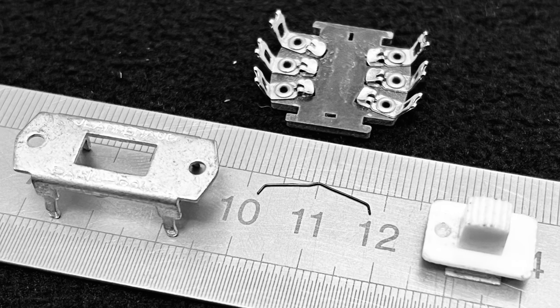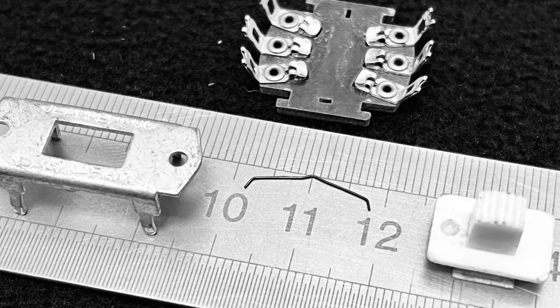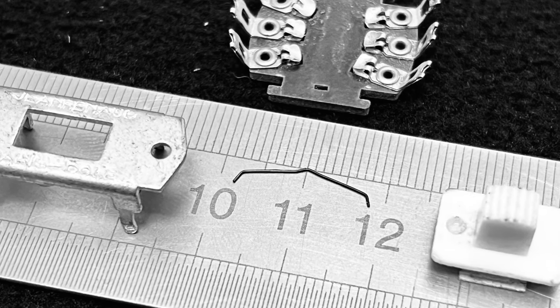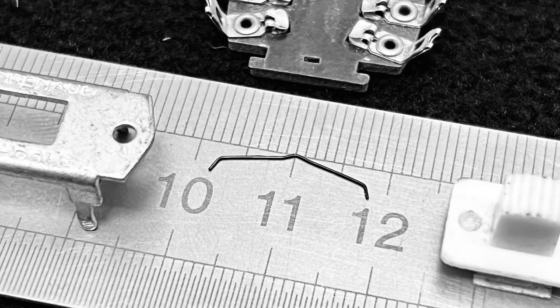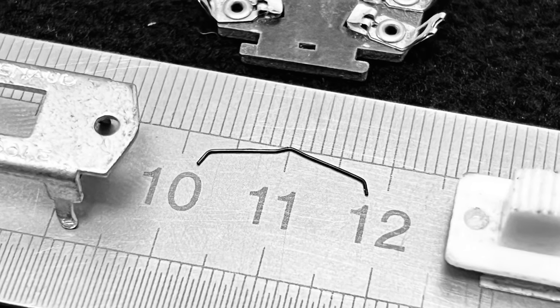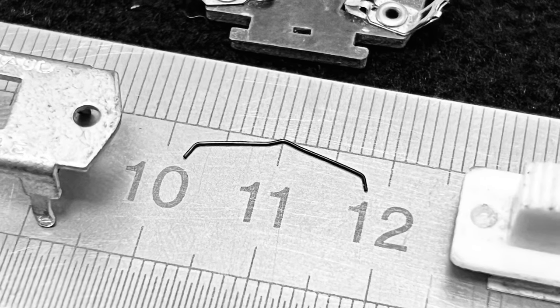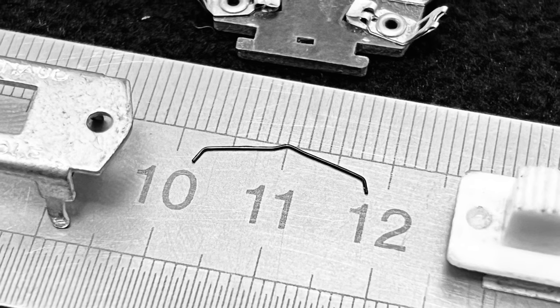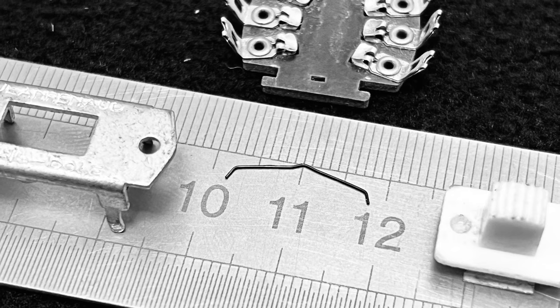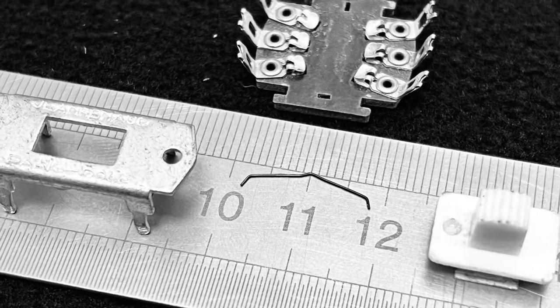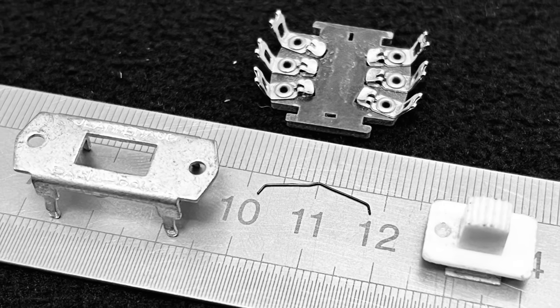The detent wire performs several functions, some of which don't become evident until you disassemble, inspect, then reassemble an original switch. Firstly, its spring tension holds the actuator up to ensure that the brass sliders are always touching the contacts, but it allows the actuator some freedom of movement in the vertical plane. Secondly, it secures the switch in whichever horizontal position it is selected to, and thirdly, it gives a positive action and feedback to the user when the switch is moved. For these reasons, it is important to select the correct gauge of wire and to replicate the wire form accurately.